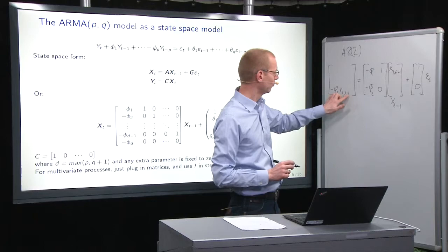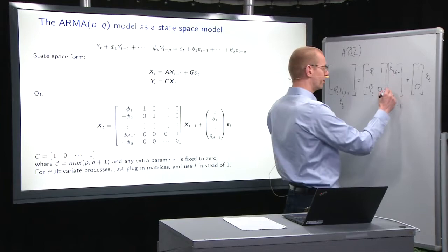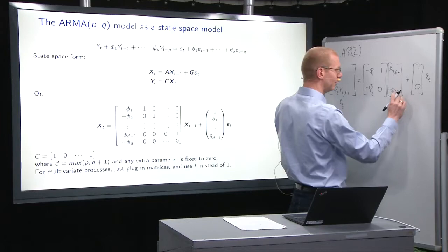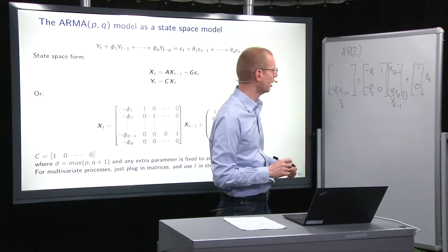Now, given that we have this, then when we look forward one step forward in time, this will move over here and become minus phi_2 x_1, and then the time shift from t to t-1 means that the t-1 becomes t-2.